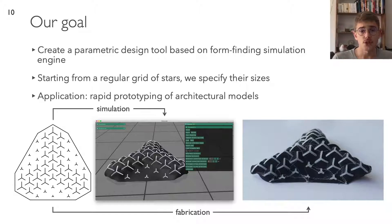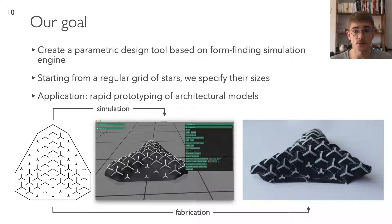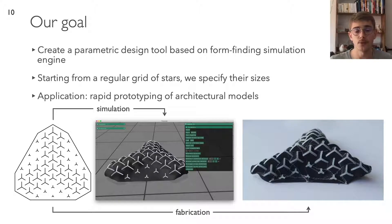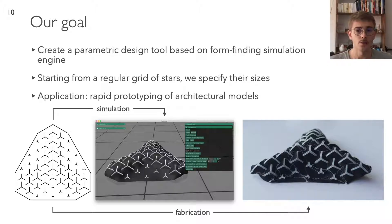Our goal for this project is to create a tool that helps users design a specific layout based on this three-pointed star tiling, allowing them to specify varying sizes for each star and a specific boundary around the layout. They can then visualize the result using a form finding tool to iterate on their design before printing. To create this tool, we implemented our own simulation engine, precisely calibrated to be as predictive as possible.